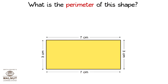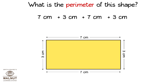What is the perimeter of this shape? We have to go around the shape and add up all the sides. Let us add the sides up. What do we get? 7 cm plus 3 cm plus 7 cm plus 3 cm is equal to 20 cm.